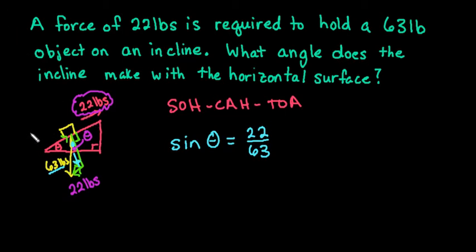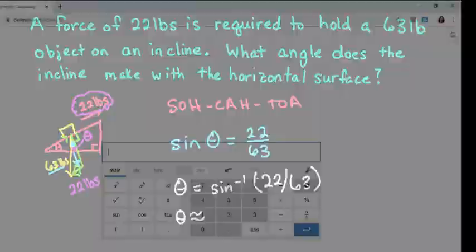So now that we have our ratio, all we have to do is use the inverse sine to find theta. We can say that theta equals the inverse sine of 22 divided by 63. And then you can use any scientific calculator to help you find your angle. For this one, I'm just going to round it to the nearest tenth.